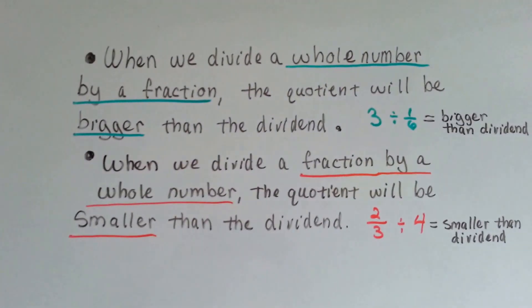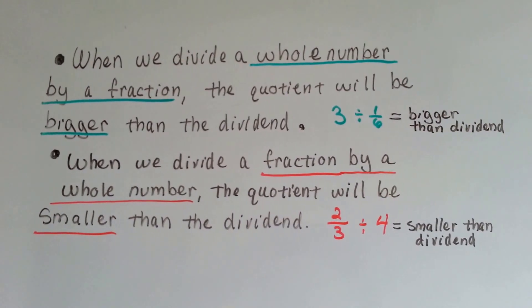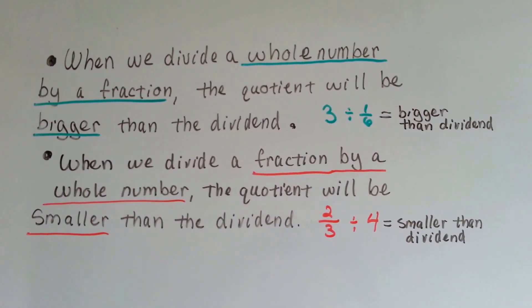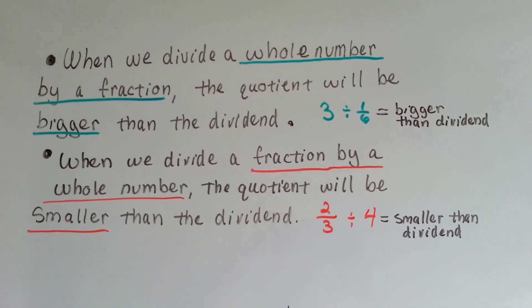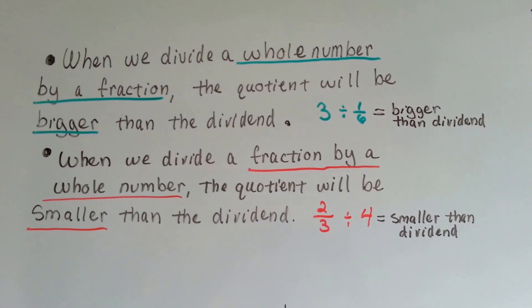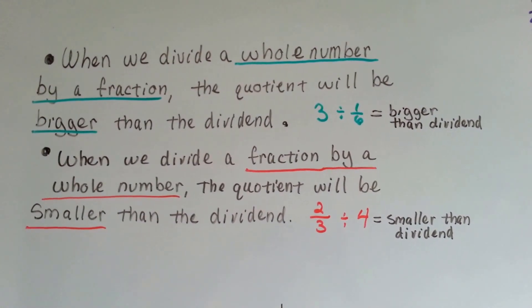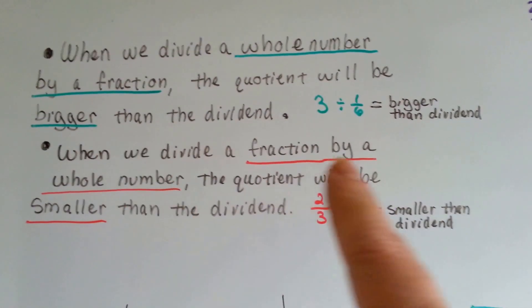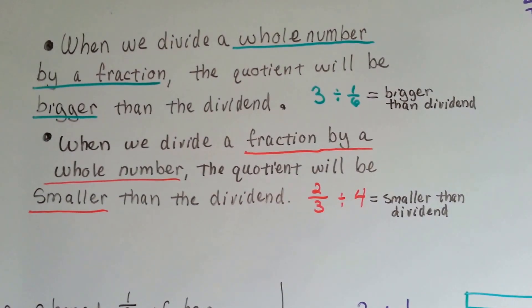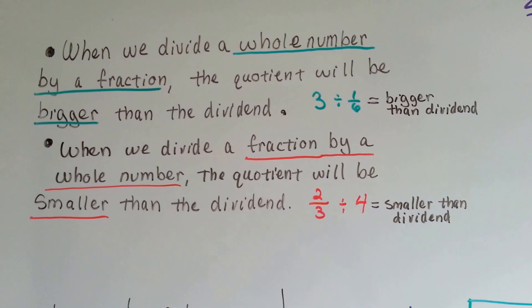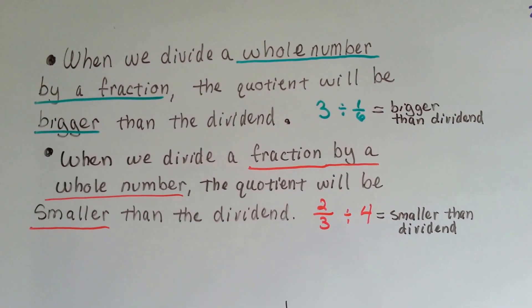When we divide a whole number by a fraction, the quotient will be bigger than the dividend. For example, 3 divided by 1/6, the quotient is going to be bigger than 3. When we divide a fraction by a whole number, the other way around, the quotient will be smaller than the dividend. For example, 2/3 divided by 4, the quotient is going to be smaller than 2/3.